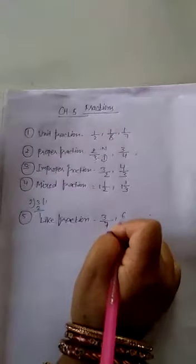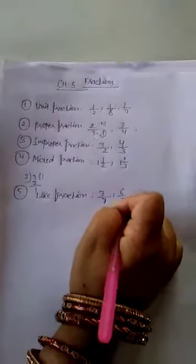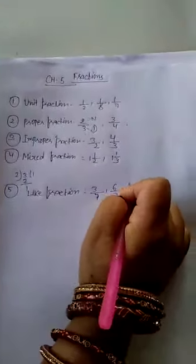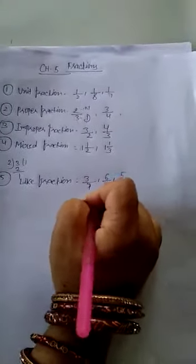Like Fractions: Fractions with the same denominator are called like fractions. For example, 3 by 7, 6 by 7, and 5 by 7 — all have the same denominator 7, so they are like fractions.